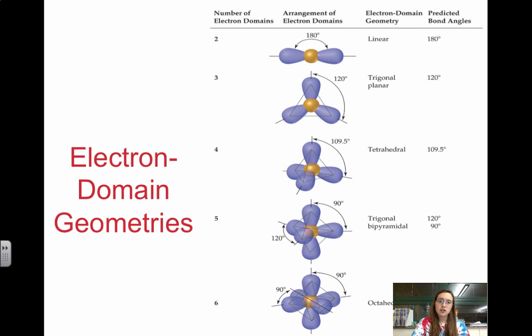Electron domain geometries are our basic shapes. When we focus on electron domains, we're just focusing on regions of electrons. If we have two electron domains, it's linear. If we have three, it's trigonal planar. Four is tetrahedral.